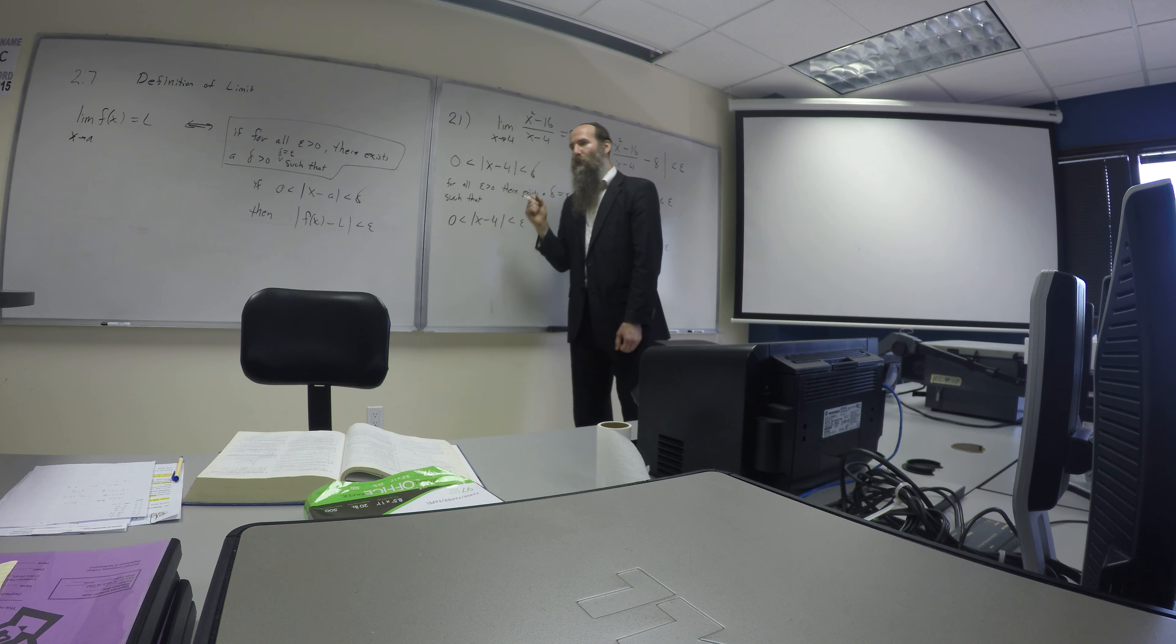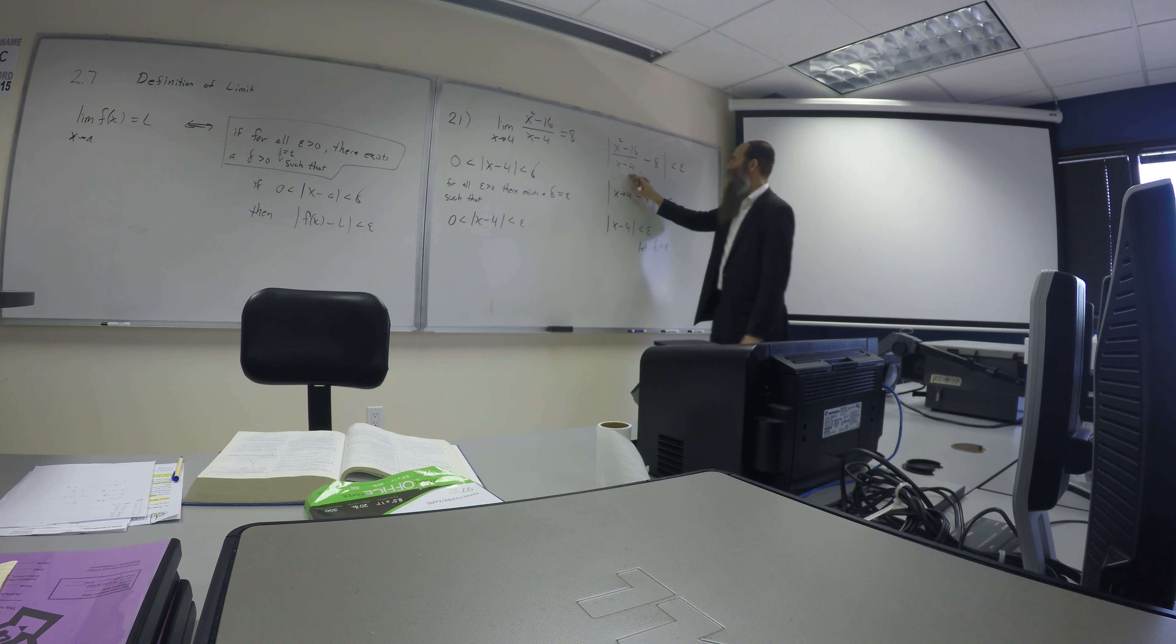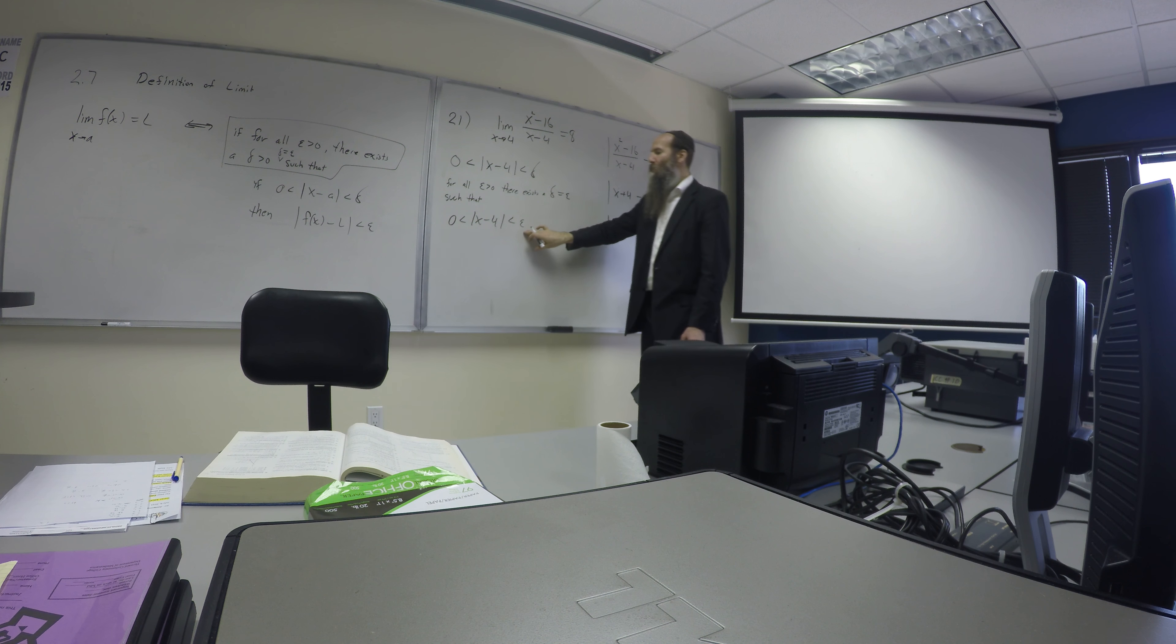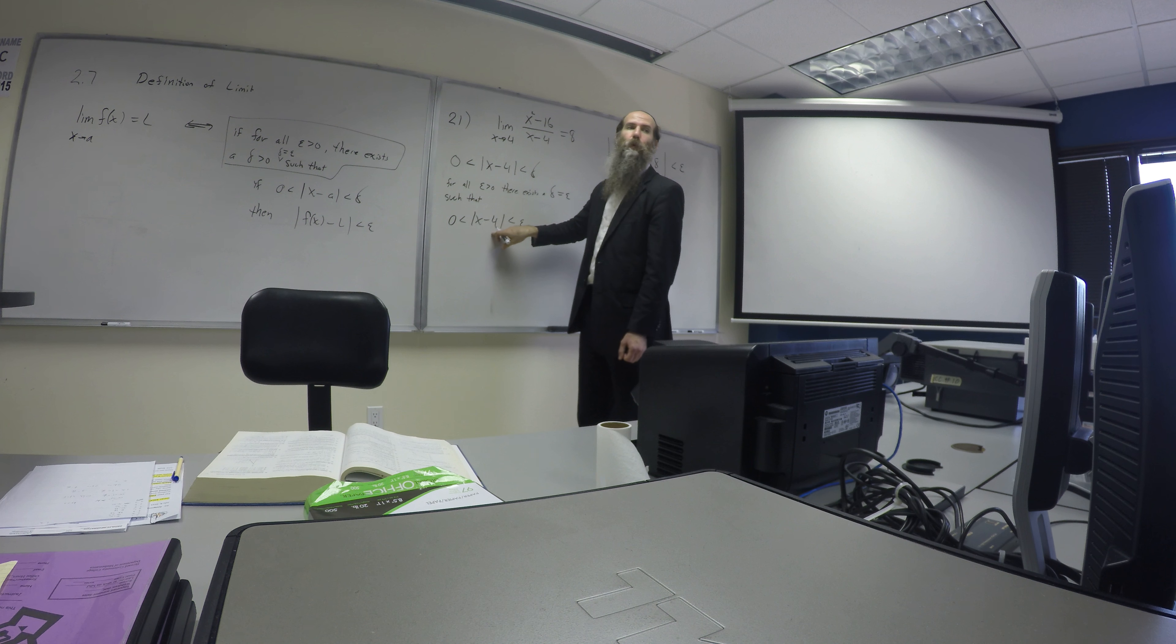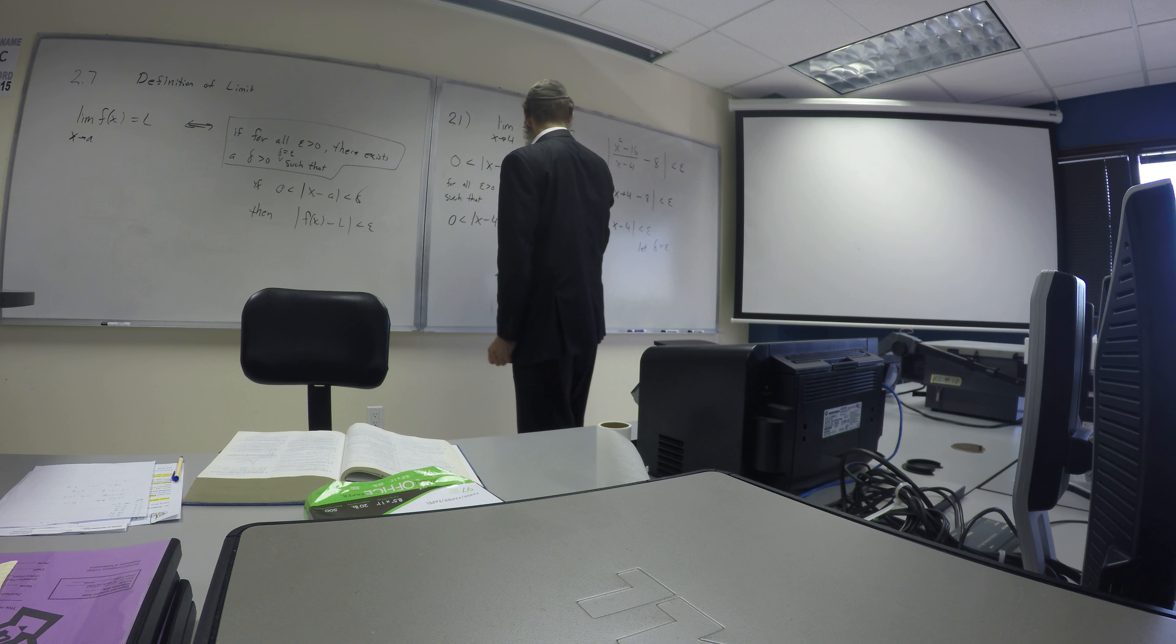In other words, whatever number you throw at me, I'm going to pick the same number. Whatever number you want your function, and the distance between your function and the limit to be bounded by, I'm going to pick the exact same number to bound the distance between x and 4. Pick the exact same thing, and it'll make it always happen. And now you just go up the chain, right? Just rewrite it, going backwards, and you get to the proper conclusion of your function being a distance of epsilon away from 8.